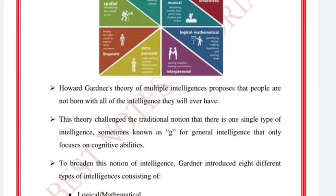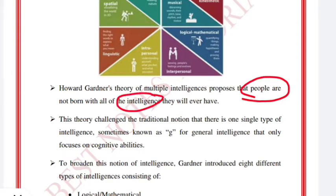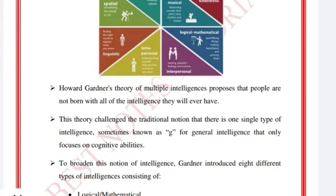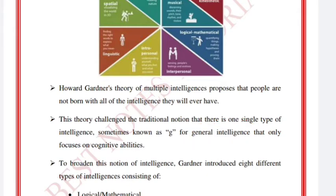Howard Gardner's theory of multiple intelligence proposes that people are not born with all of the intelligence they will ever have. Gardner said that intelligence is acquired, and people are not born with it. Before Gardner, there were theories such as the 'g-type' or general intelligence, and Gardner challenged that theory.